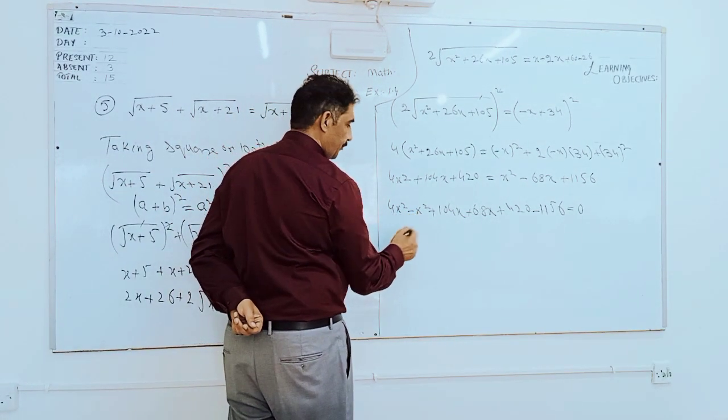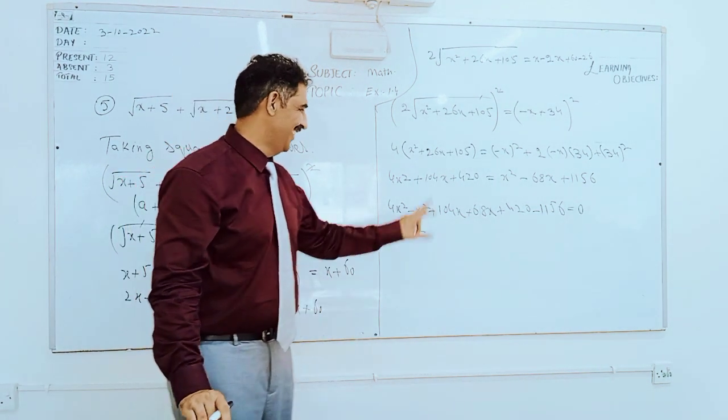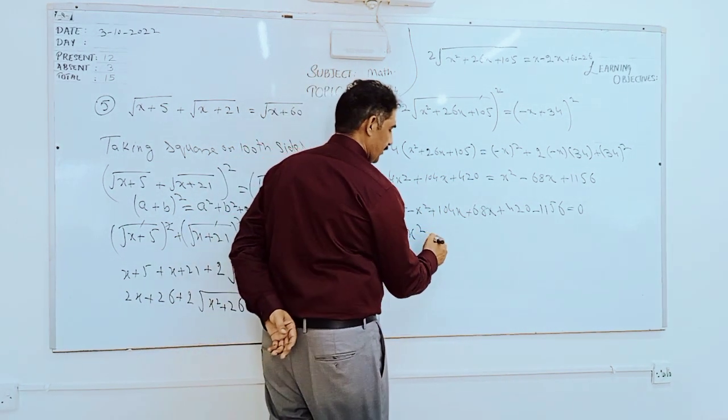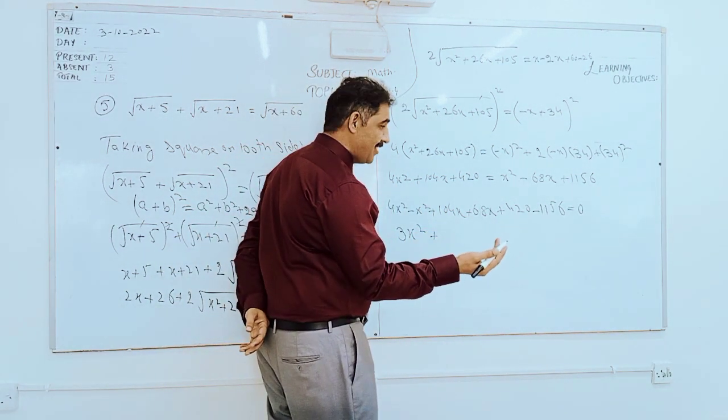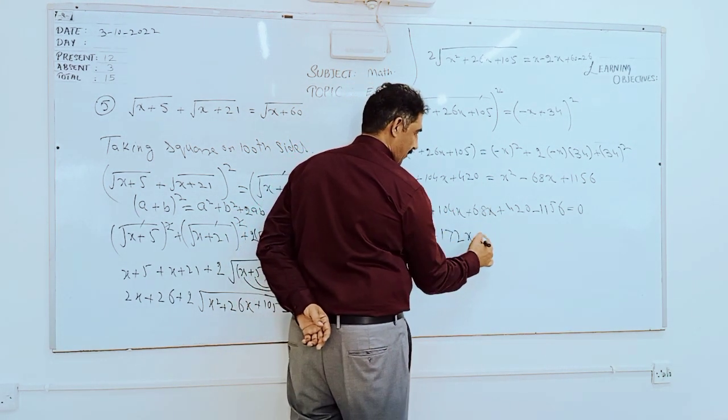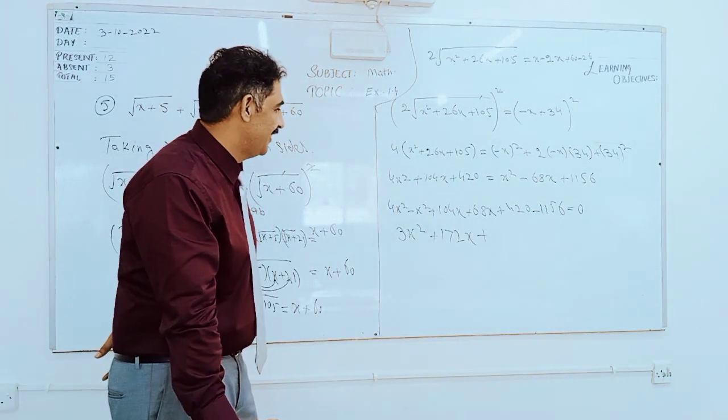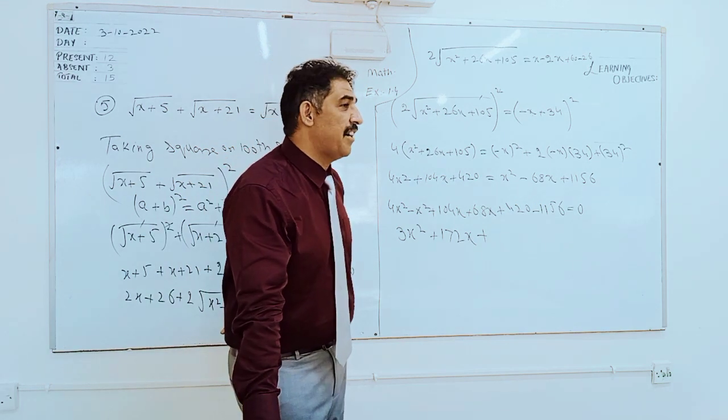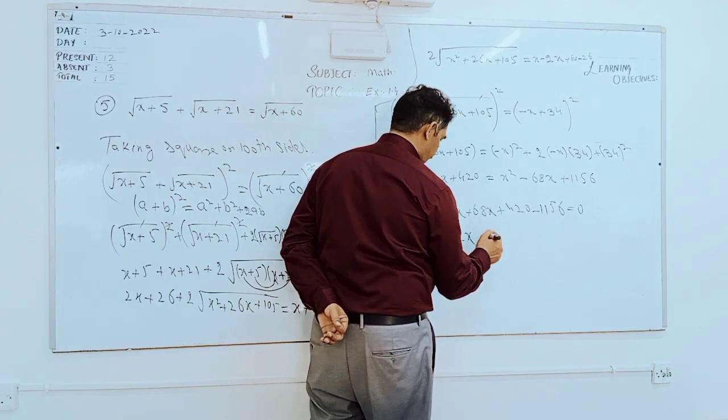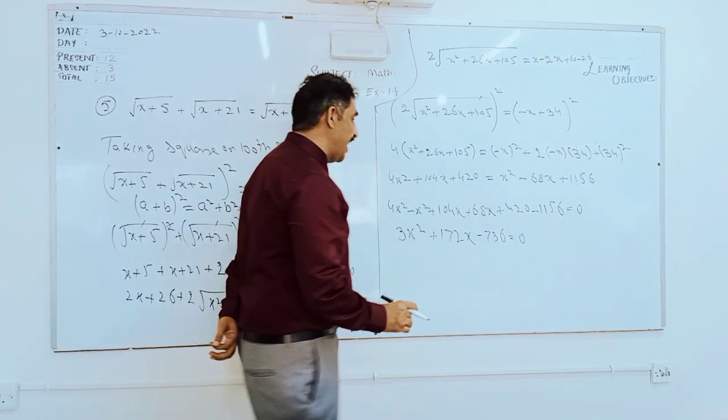Simplification of this one: left hand side first, what is that? 4x² + 104x + 420, and right hand side x² - 68x + 1156. Now we have to simplify: all the terms on one side. Shift all terms on the left hand side. 4x² - x² + 104x + 68x + 420 - 1156 = 0.